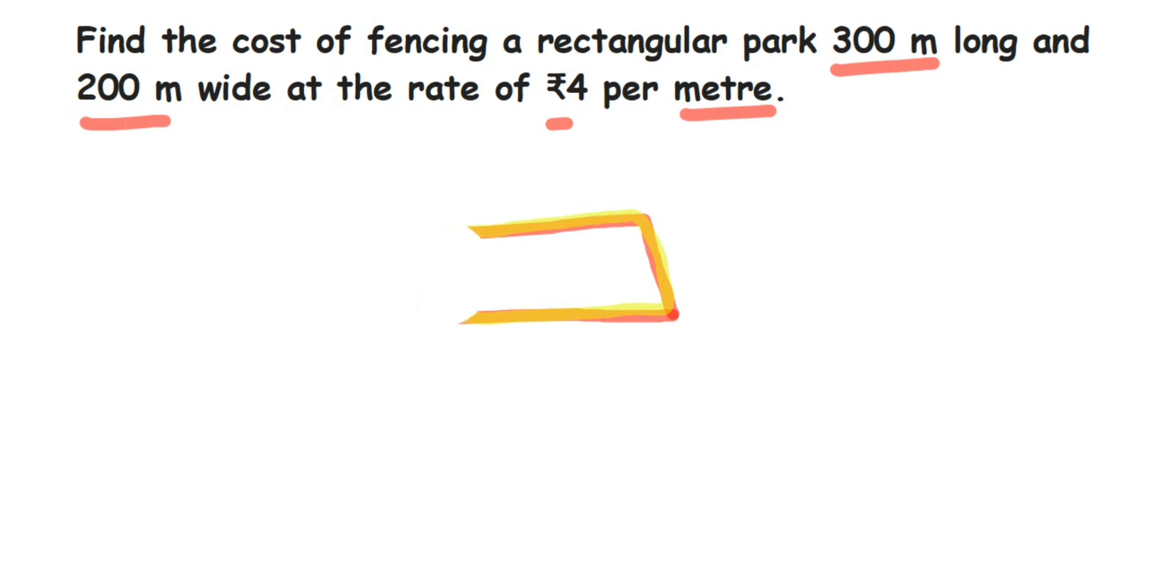Now let's write down what is given. Given: length is equal to 300 meters and breadth is equal to 200 meters. First we are going to find out the perimeter of the rectangular park.